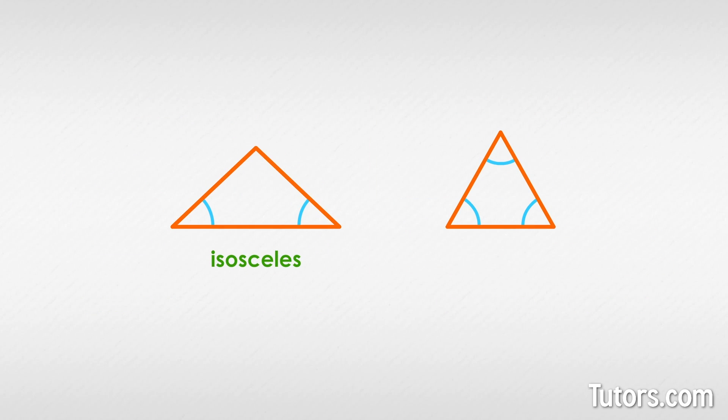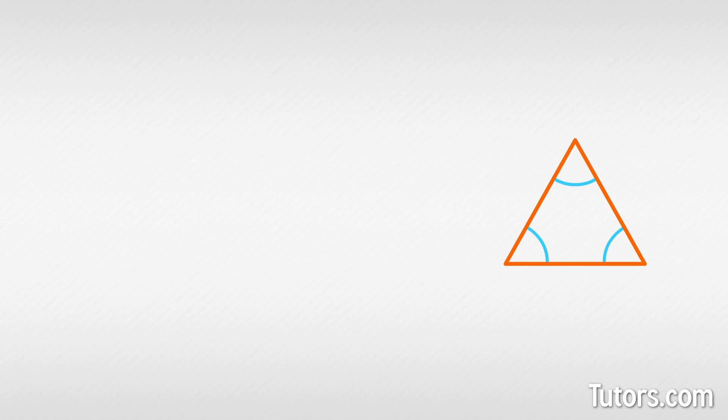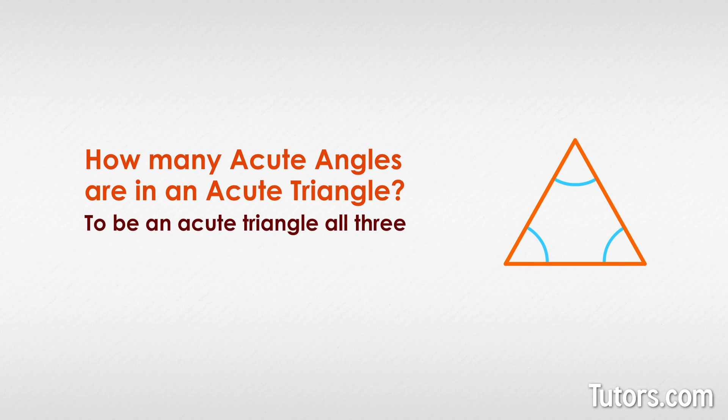Consider these isosceles and equilateral triangles, which depend on two and three acute angles for their construction. This brings up a common question: how many acute angles are in an acute triangle? To be an acute triangle, all three interior angles must be acute angles.